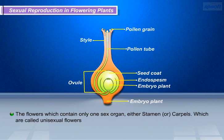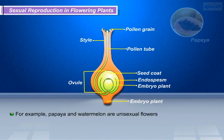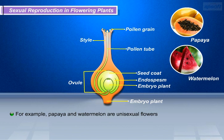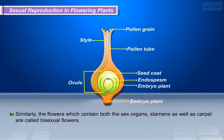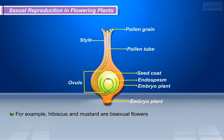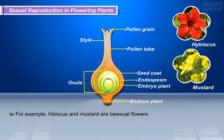The flowers which contain only one sex organ, either stamen or carpel, are called unisexual flowers. For example, papaya and watermelon have unisexual flowers. Similarly, the flowers which contain both the sex organs — stamens as well as carpel — are called bisexual flowers. For example, hibiscus and mustard are bisexual flowers.